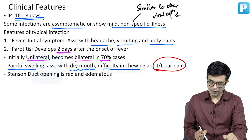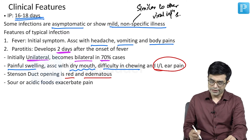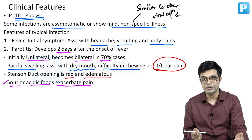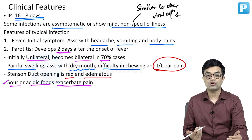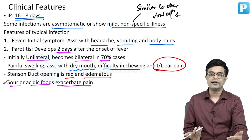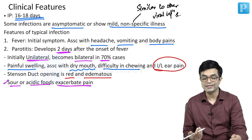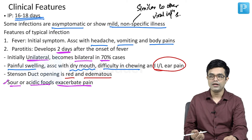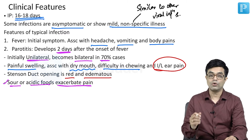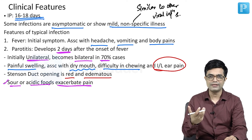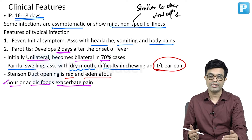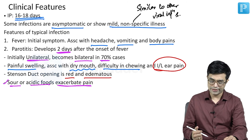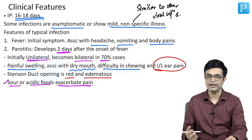Stensen's duct opening is found to be red and edematous on examination. A very important clinical point is that sour or acidic foods tend to exacerbate pain. That is why when we manage patients of mumps, we always advise bland, soft, semi-solid food without spices — typically a high carbohydrate, easy-to-digest diet. Things like dals without tadka, rice over chapati, and custards are advised for children as they are energy-rich and do not provoke pain when eaten.